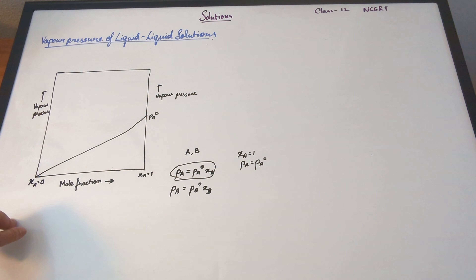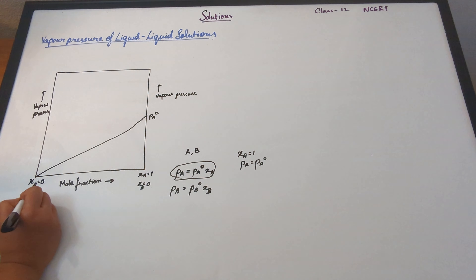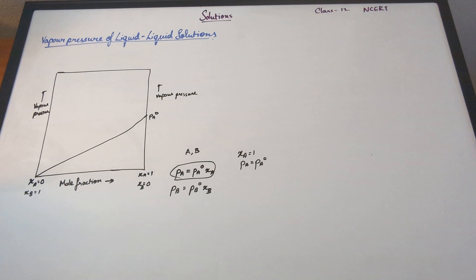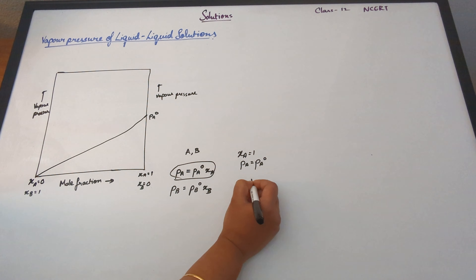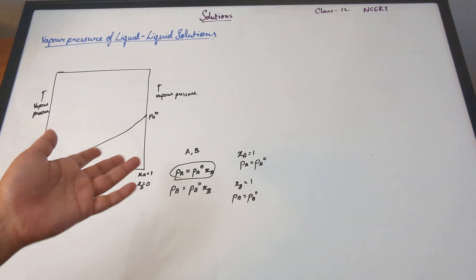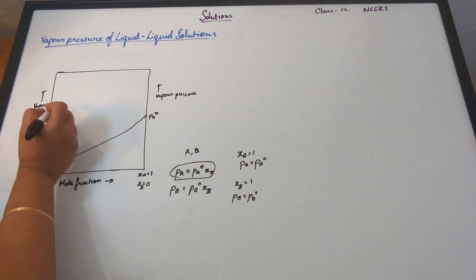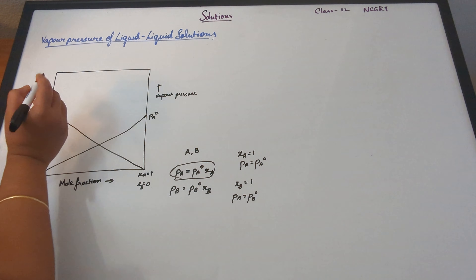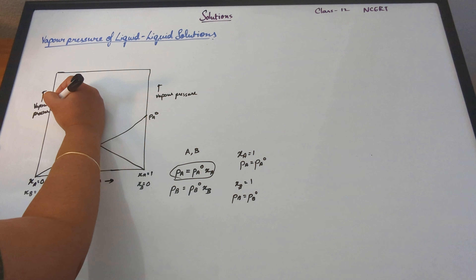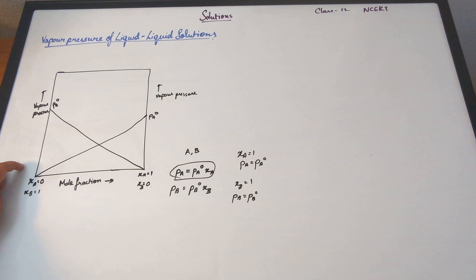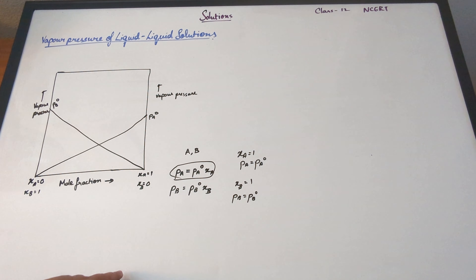Slowly, based on the various mole fractions of A, there will come a point when Xa equals 1, and then you'll have the vapor pressure of the pure component. So this marks Pa0, the vapor pressure of the pure component. Basically when Xa = 0, there is no vapor pressure associated with A. With variation in mole fraction, moving on to Xa = 1, you will have Pa0.